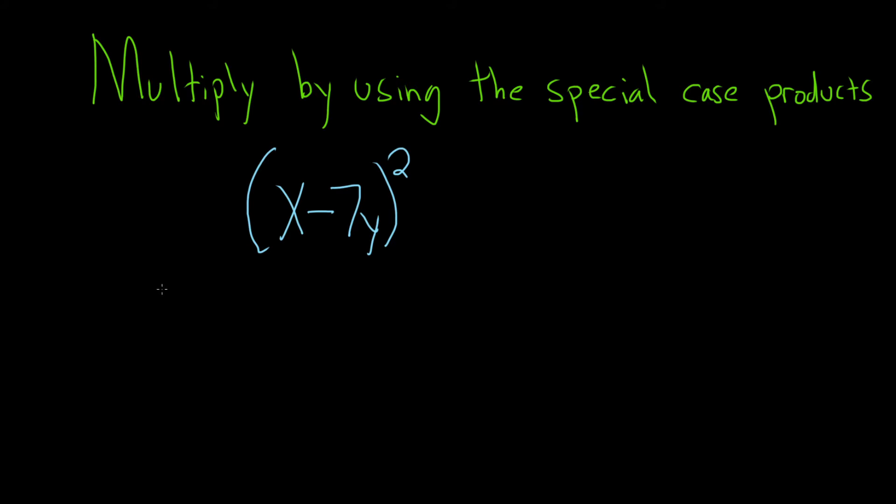So let me recall the formula that we're going to use in this problem. The formula says if you have A minus B and you square it, there is a really fast way to do this.